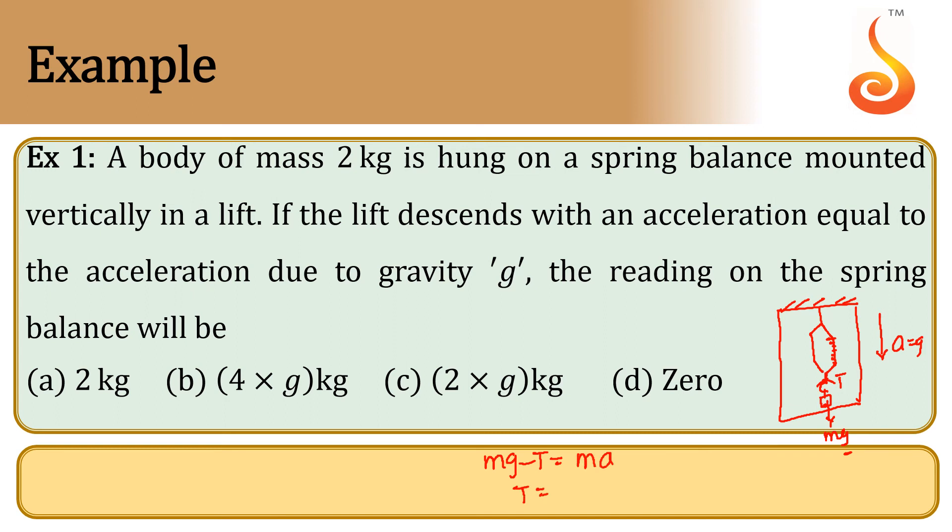Tension is equal to mg minus ma. But here acceleration is given g value. So, tension is equal to mg minus mg which is equal to 0.